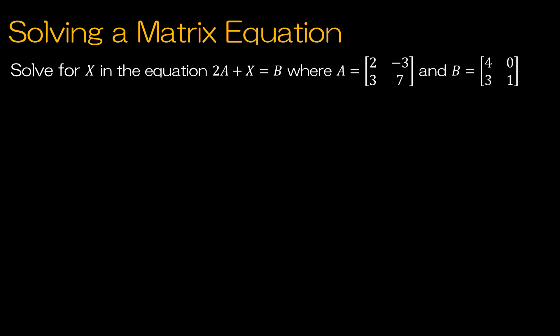Before we move on, let's talk a little bit about matrix algebra. This isn't the matrix equation we spoke about earlier. We have 2A plus X is equal to B, and we're trying to solve for X. A is a matrix, B is a matrix, and we're solving for X, which is also a matrix. So it makes sense that I would subtract 2A from each side, giving me X equals B minus 2A.